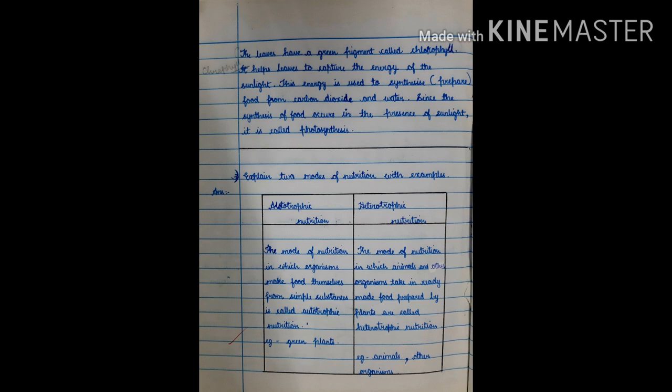Question number 3. Explain two modes of nutrition with examples. Answer. Autotrophic nutrition and heterotrophic nutrition. Autotrophic nutrition. The mode of nutrition in which organisms make food themselves from simple substances called autotrophic nutrition. Example, green plants.